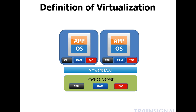In the case of desktop virtualization, the end users connect to these virtual machines and get their desktop. They run those applications and use those virtual devices to connect to the network or to their data through the virtual IO devices to the storage area network. In this diagram you've just got two virtual machines, but a typical server could have 30, 40, even 60 virtual machines depending on how powerful that physical server is.